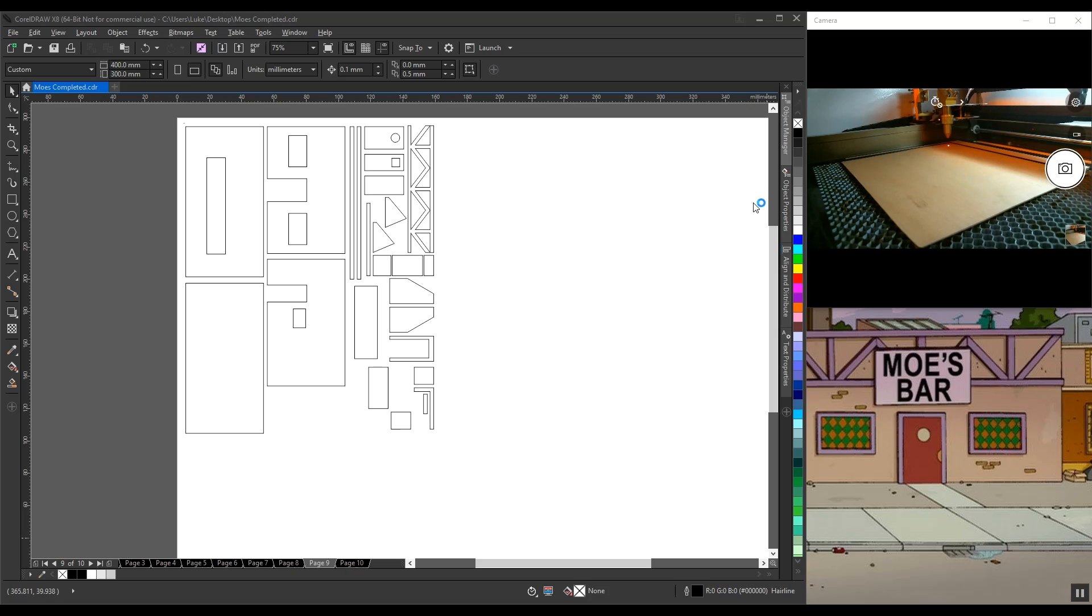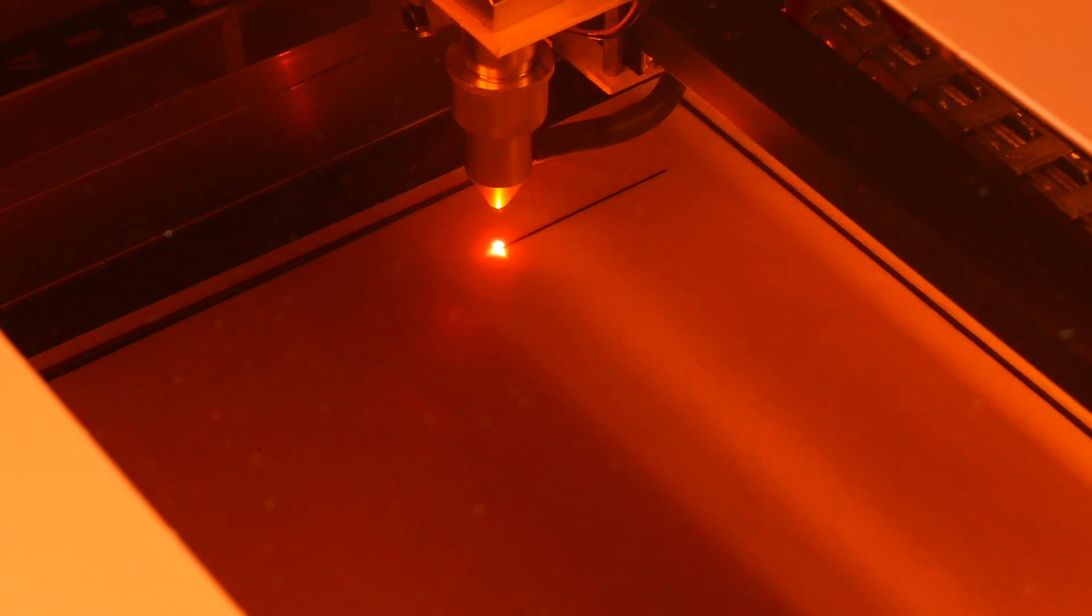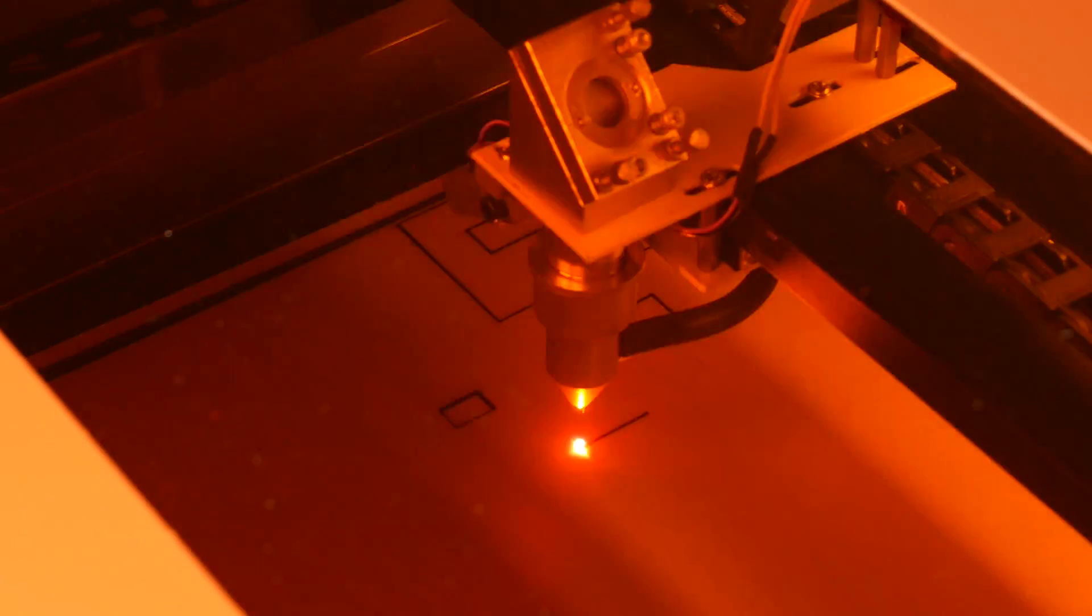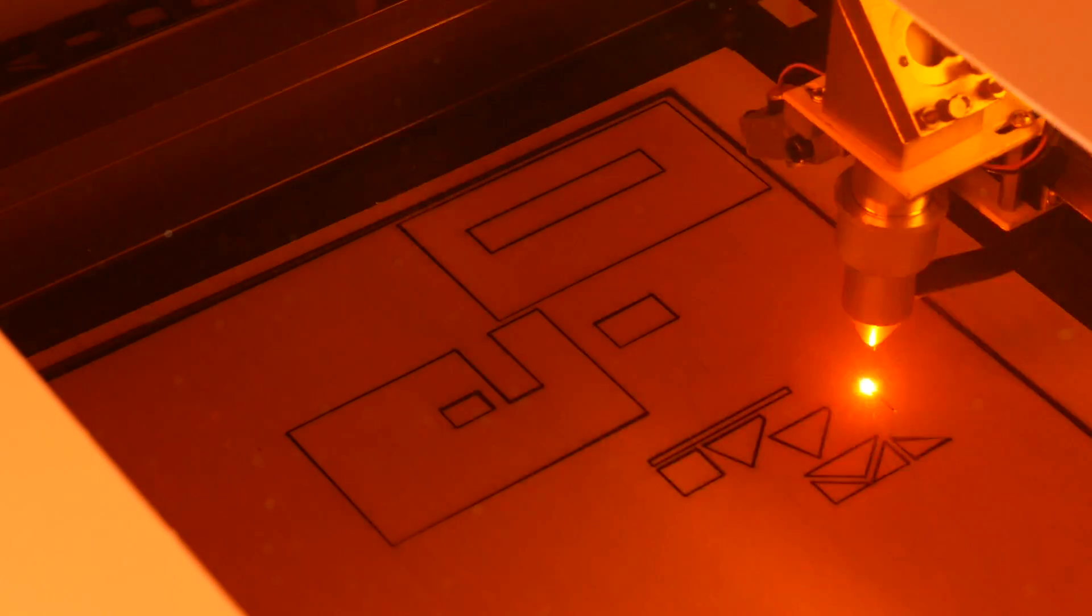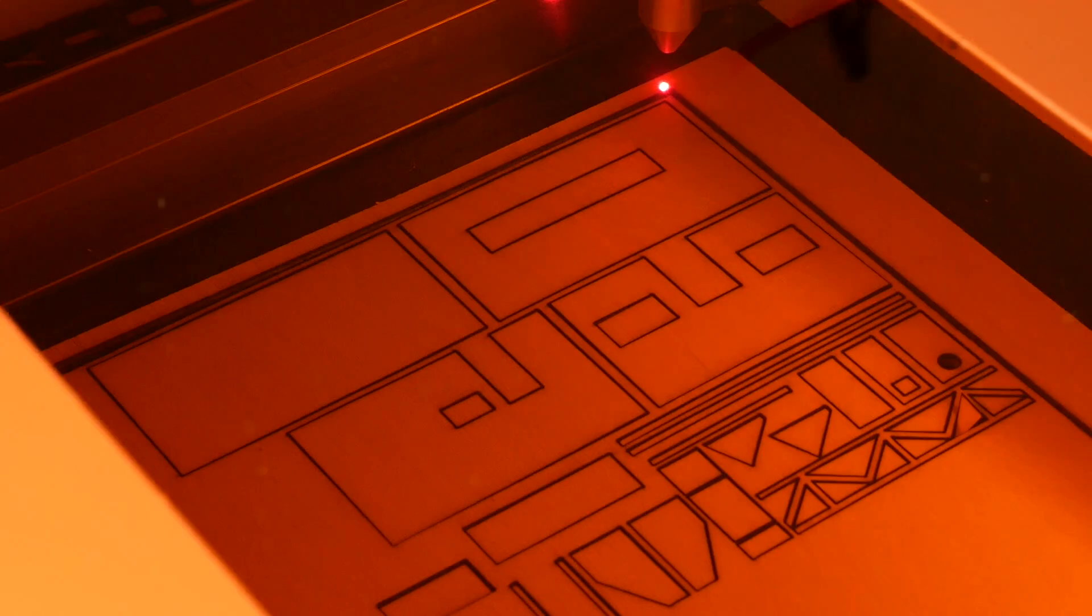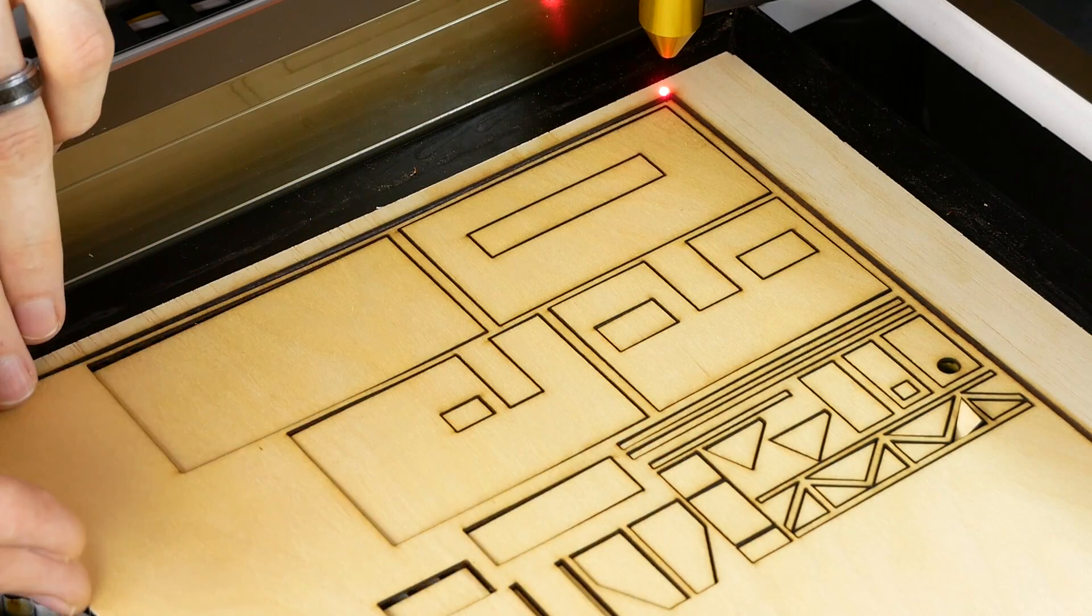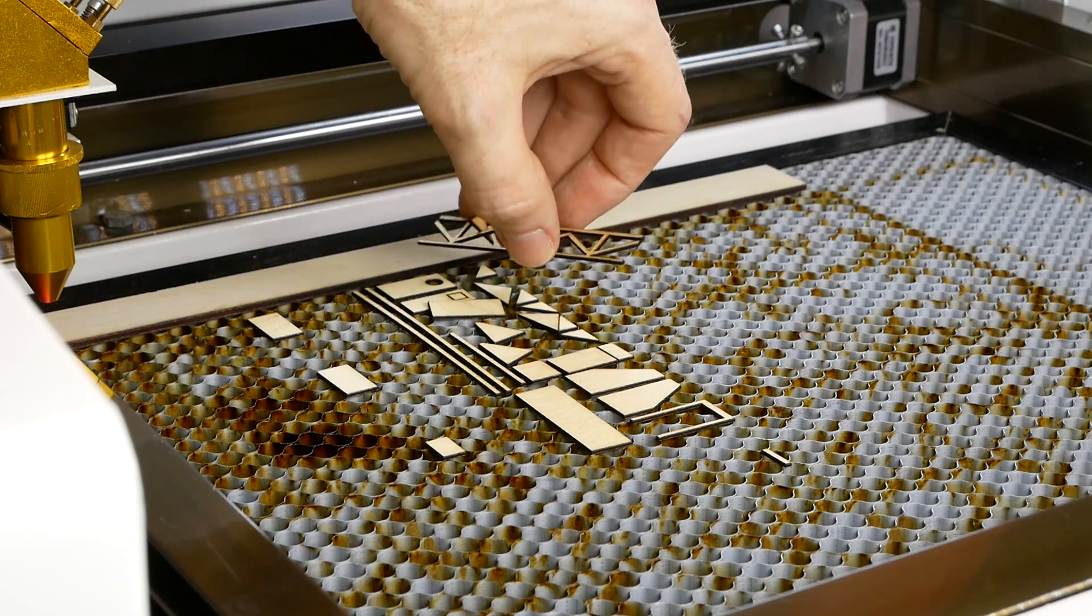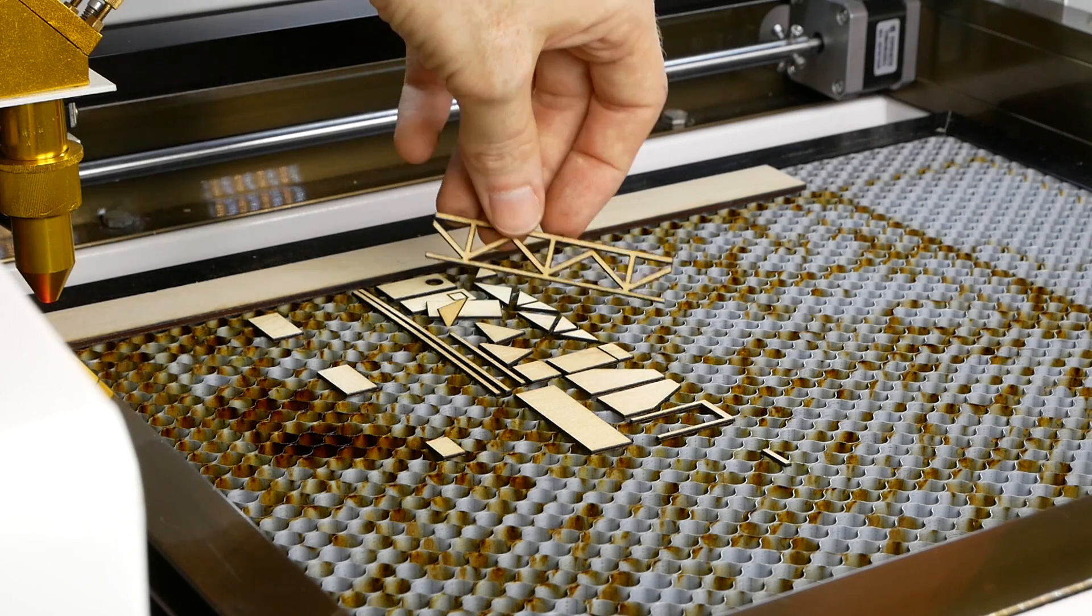It's fascinating to watch the laser do its job, and it's even better when it finishes cutting and you realized it's worked flawlessly. Now all we need to do is repeat the process for the other components. Just remember to reset the focal distance every time you change the material type, and adjust the power. Thinner material usually requires less power.